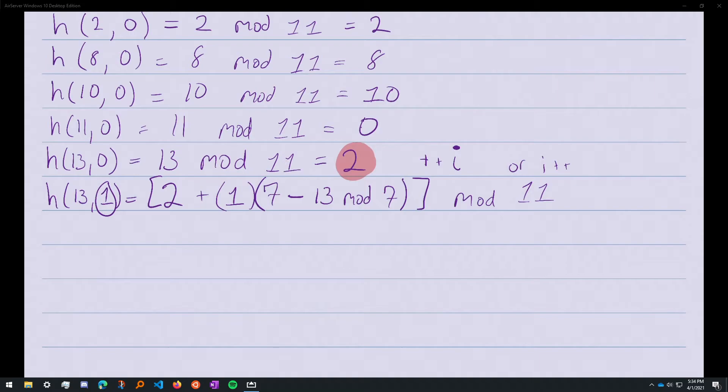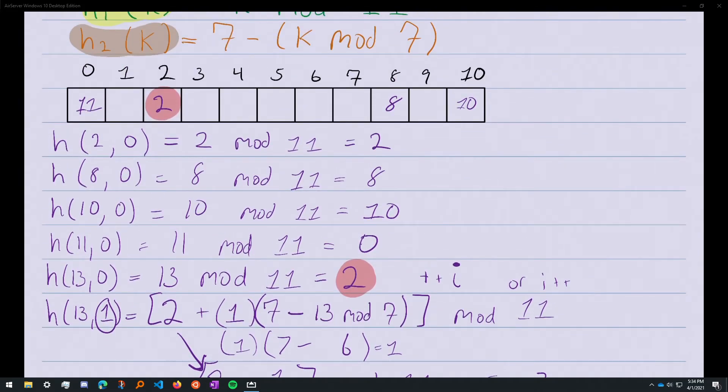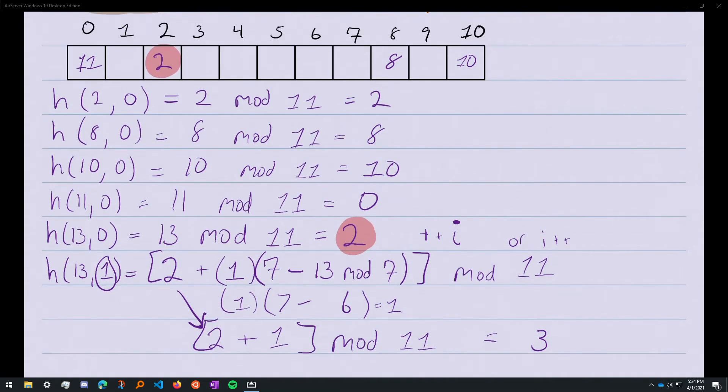So 13 mod 7 yields 6, and 7 minus 6 is 1. 1 times 1 equals 1. We have 2 plus 1, modded with 11, which equals 3. Do we have a collision? No. So we can put 13 into position 3 now.